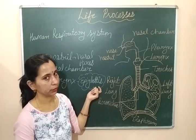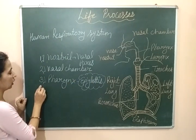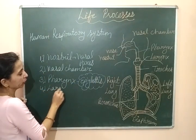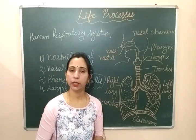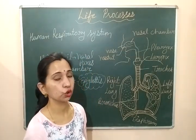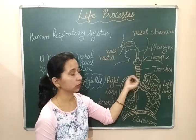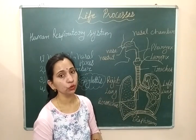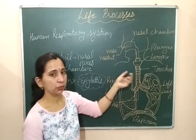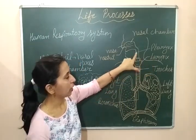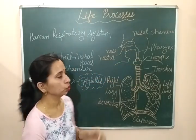After pharynx, air opens into the next structure — the larynx. The larynx is also known as the sound box or voice box. It is the part from where air travels and we are able to produce sound. The larynx connects the pharynx to the trachea, which is the windpipe.